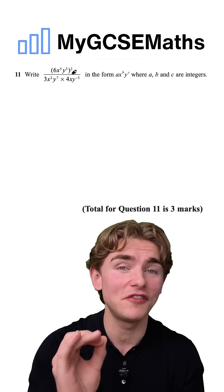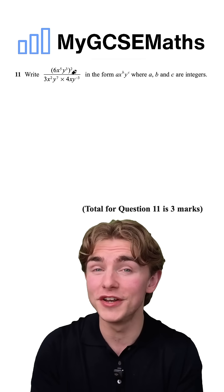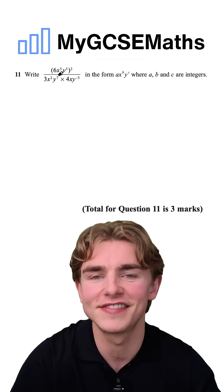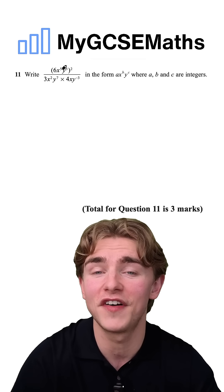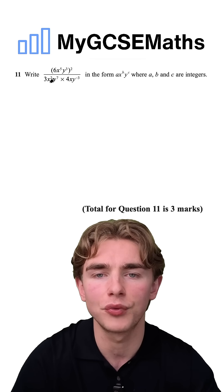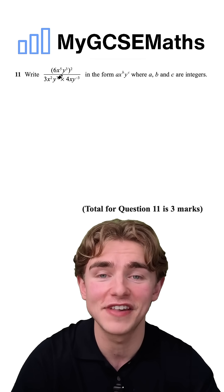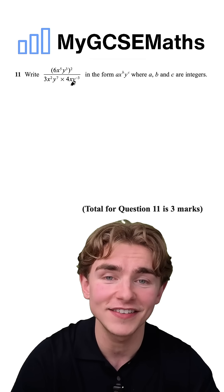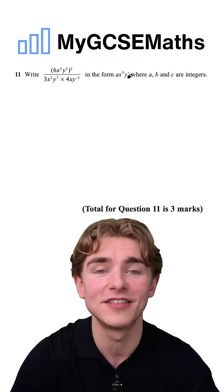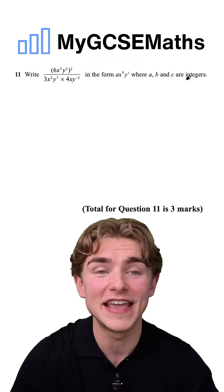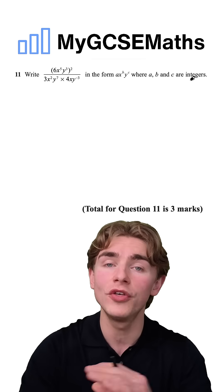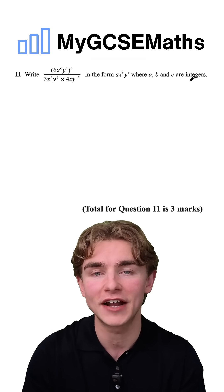This is another question which very few people got right, but if you can do it, this is basically free marks. The question says: write 6x to the power of 5, y to the power of 3, all to the power of 2, over 3x to the power of 2, y to the power of 7, times by 4xy to the power of negative 3, in the form ax to the power of b, y to the power of c, where a, b, and c are integers. Basically, all that we have to do is simplify this algebraic fraction.